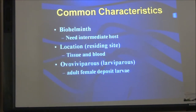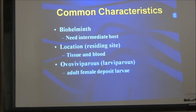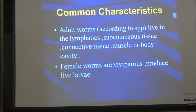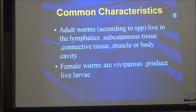The common characteristics of tissue nematodes are that they need intermediate hosts and they are localized either in the tissue or sometimes in the blood. They are either oviparous, meaning they lay eggs, or sometimes they produce larvae. The worms, according to species, live in the lymphatics, subcutaneous tissue, connective tissue, muscle, or body cavity, and the female worms are viviparous — they produce live larvae.